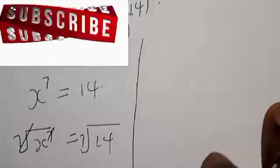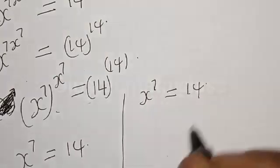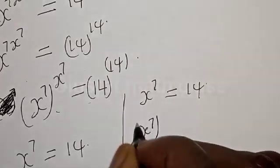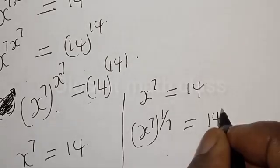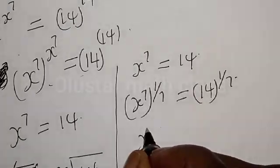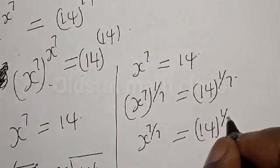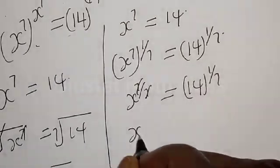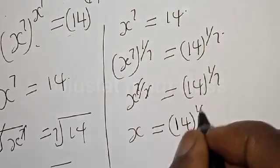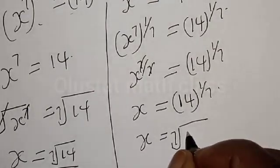Alternatively, we have s raised to power 7 is equal to 14. Now let's multiply both sides by the power of 1 over 7. That is, s raised to power 7 multiplied by 1 over 7 is equal to 14 multiplied by 1 over 7. Then we have s raised to power 7 over 7 is equal to 14 raised to power 1 over 7. The 7s cancel, giving us s is equal to 14 raised to power 1 over 7. Therefore our final answer is s is equal to the seventh root of 14.